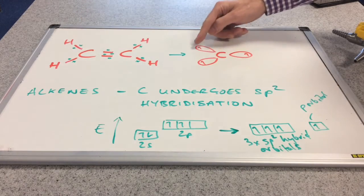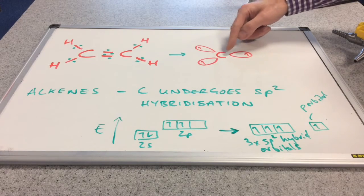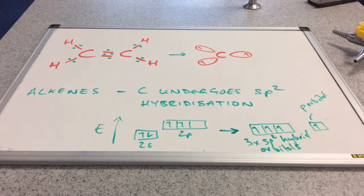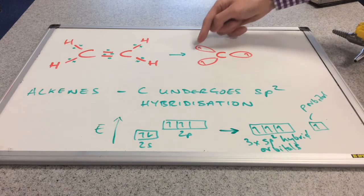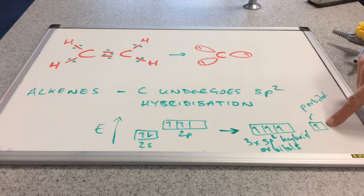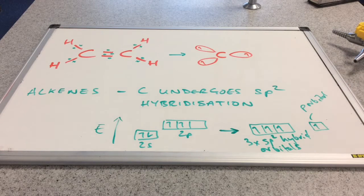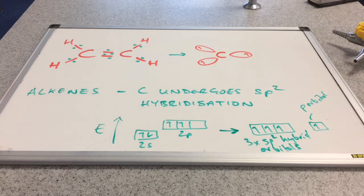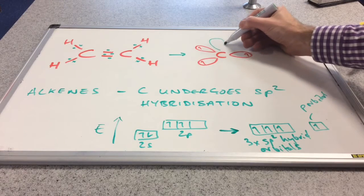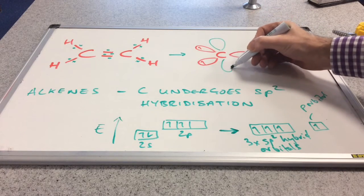So these three sort of lobe shaped single lobe shapes, if you like, these are the three sp² hybrid orbitals and there's the unpaired electrons in there. So this electron here is actually in a p orbital, so there's no hybridisation occurred there. And if we remember, p orbitals are lobe shaped but there's an upper lobe and a lower lobe.